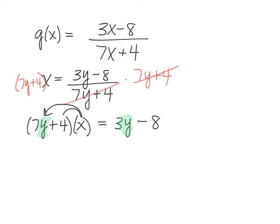So instead, you want to go ahead and distribute. I think of it like that's the only way I'm going to get this y out of the parentheses, out of jail, if you will. So if I distribute, that's going to be 7yx plus 4x equals 3y minus 8.